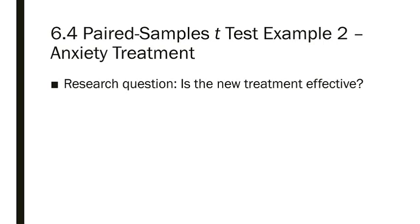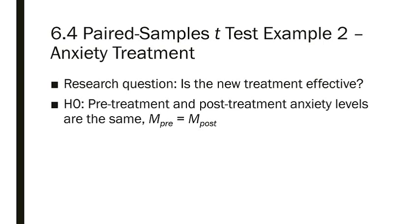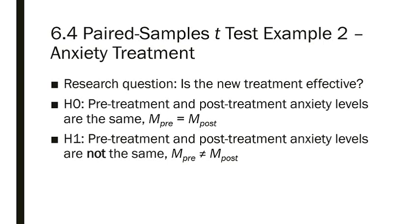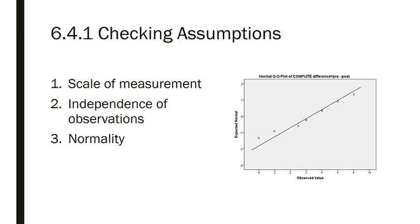The research question is simply: is this new cognitive behavioral treatment for anxiety effective? The null hypothesis would be that pre-treatment and post-treatment anxiety scores are the same. The alternative hypothesis is non-directional: pre-treatment and post-treatment anxiety levels are not the same. The independent variable is pre versus post-treatment, and the dependent variable is anxiety operationalized as the Beck Anxiety Inventory score. This is a two-tailed hypothesis.